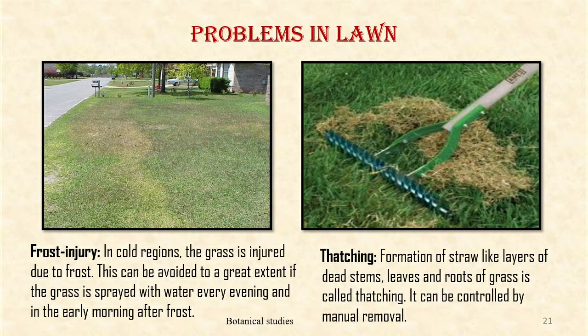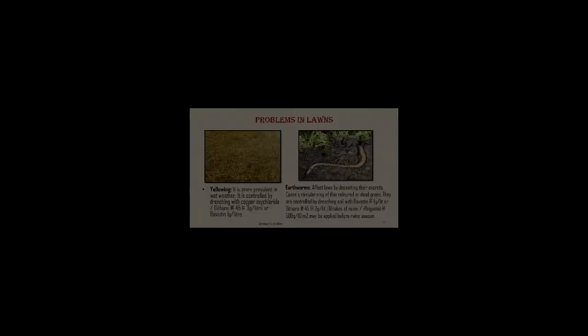Problems in lawns: Frost injury — In cold regions, the grass is injured due to frost. This can be avoided to a great extent if the grass is sprayed with water every evening and in the early morning after frost. Formation of straw-like layers of dead stems, leaves and roots of grass is called thatching. It can be controlled by manual removal.